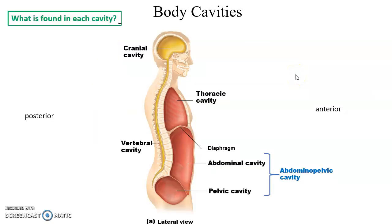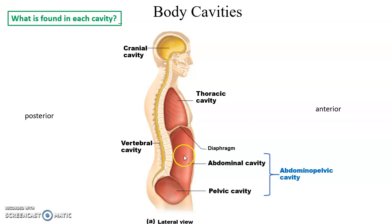Body cavities are spaces within the body that are filled with stuff. They tend to be formed by bones and/or muscle tissue. Some body cavities include the cranial cavity in the skull, where we find the brain, and the vertebral cavity found within the vertebral column, where we find the spinal cord. The thoracic cavity within the chest is separated from the abdominal cavity by the diaphragm — a sheet-like muscle that acts as a physical separation.